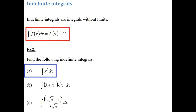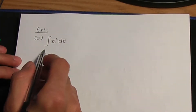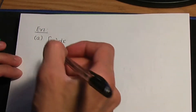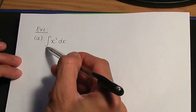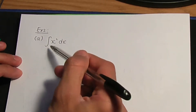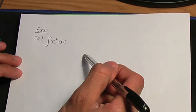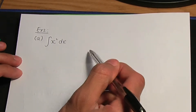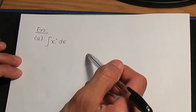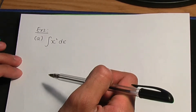Here is example 2, part a. Let's integrate x squared with respect to x. This is an indefinite integral, as this integral does not have limits. Whenever we calculate an indefinite integral, we're going to have the integral function — the function we get after the integration process — but we must add a constant of integration c.